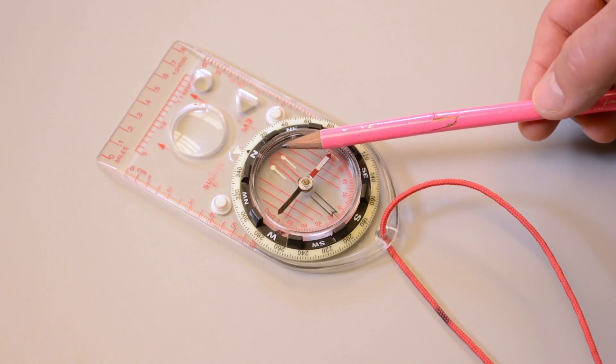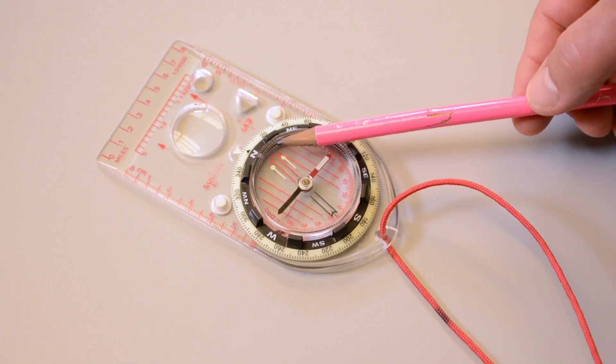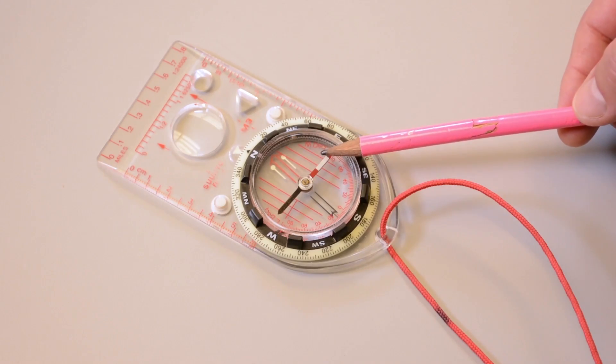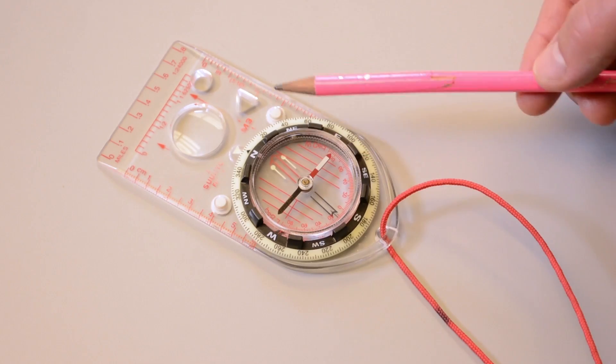This is the orienteering arrow, also known as the shed. The shed is aligned with the magnetic needle to take a bearing to an object or to follow a particular bearing. More on that in lesson two.